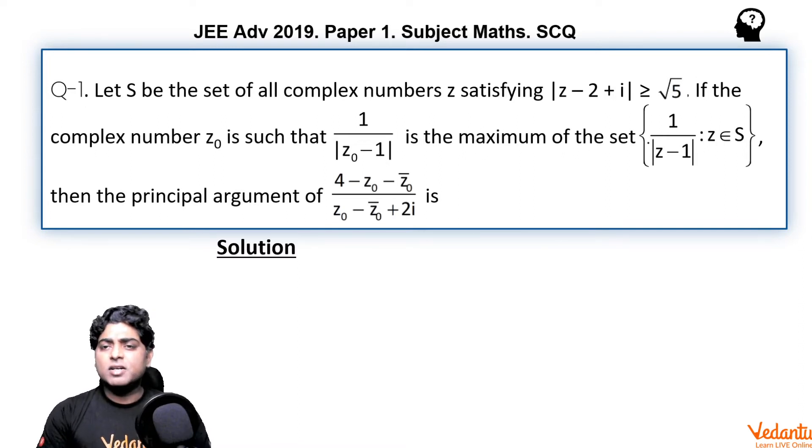And z0 is one of the possible positions. Z0 is such that mod of z0 minus 2 plus iota is more than or equal to root 5, means z0 is either in the exterior of the circle or on the boundary of a circle with center at 2 comma minus 1 and radius root 5. So if we plot it, I am plotting it roughly.